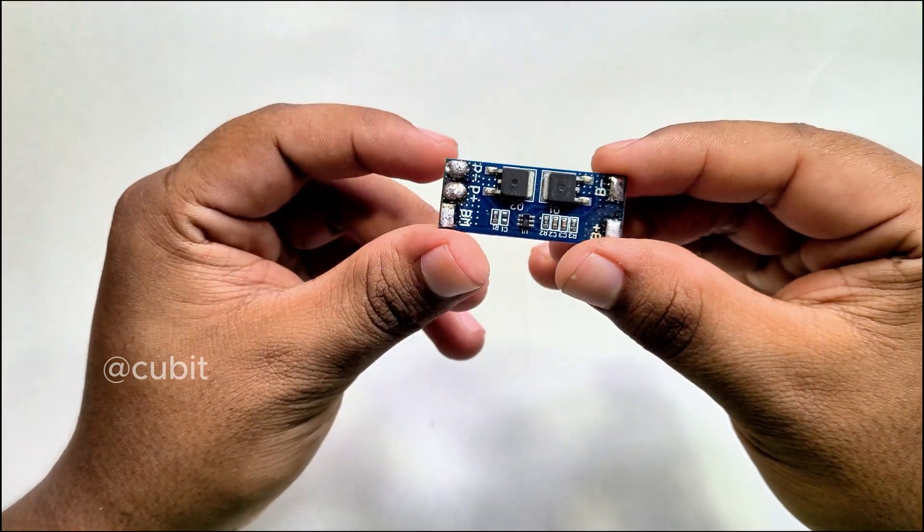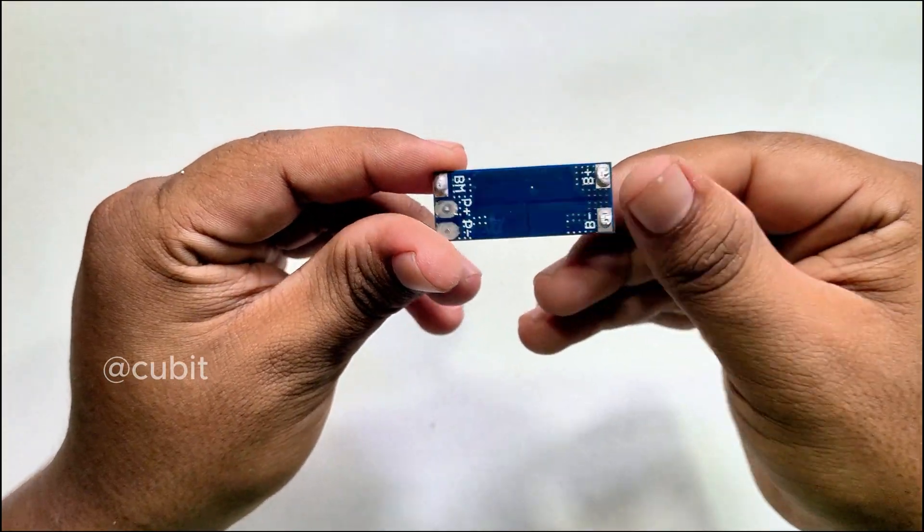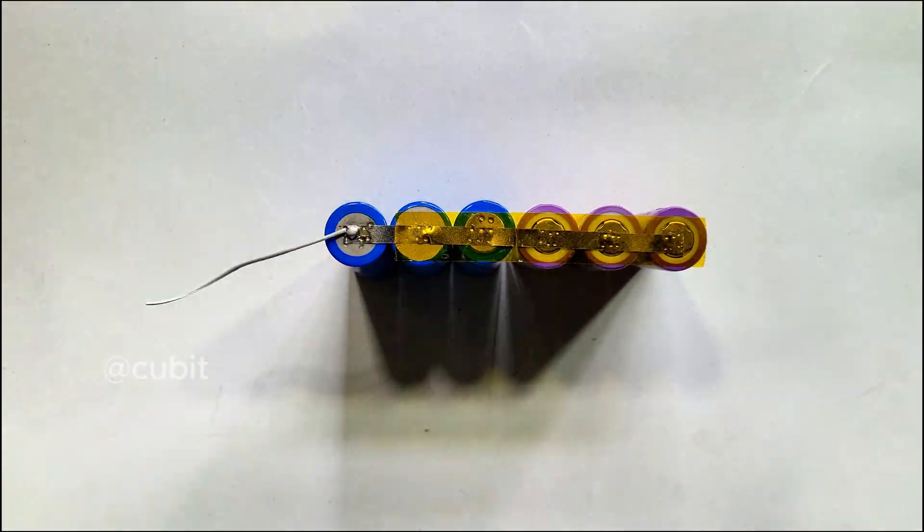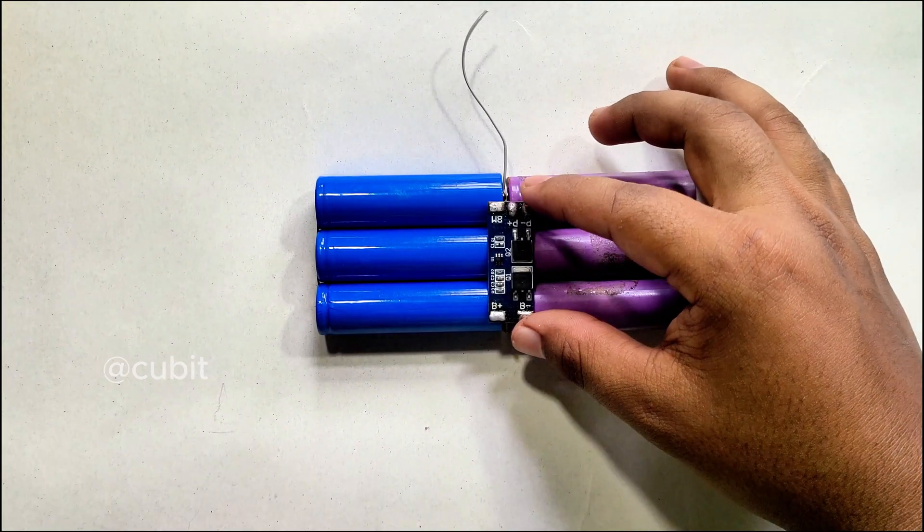This is a 2S BMS. It protects the battery pack from over-discharge, over-voltage, and short-circuit. Let's connect the BMS using the circuit diagram.